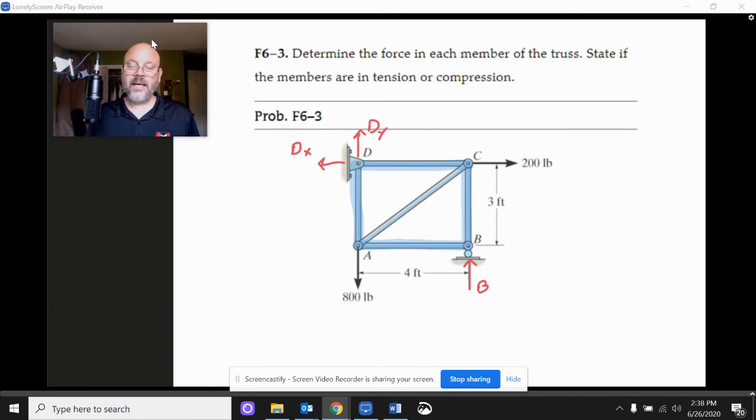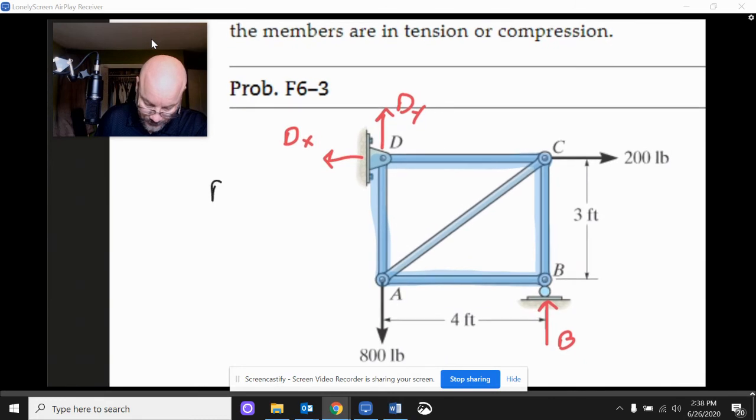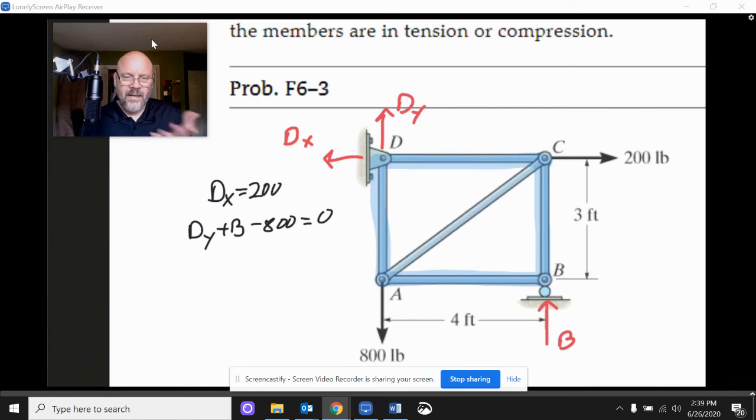Now we've got to work them out. Okay. So we've got a three, four kind of thing going on again. So thinking about what's happening horizontally, we can see then that DX is 200. And then we've got DY is up, B is up. So let me write that down. DY plus B minus 800 is equal to zero. So there's my vertical forces, right? So I've got two unknowns DY and B. So I'm going to have to go to another resource, which is the moments.